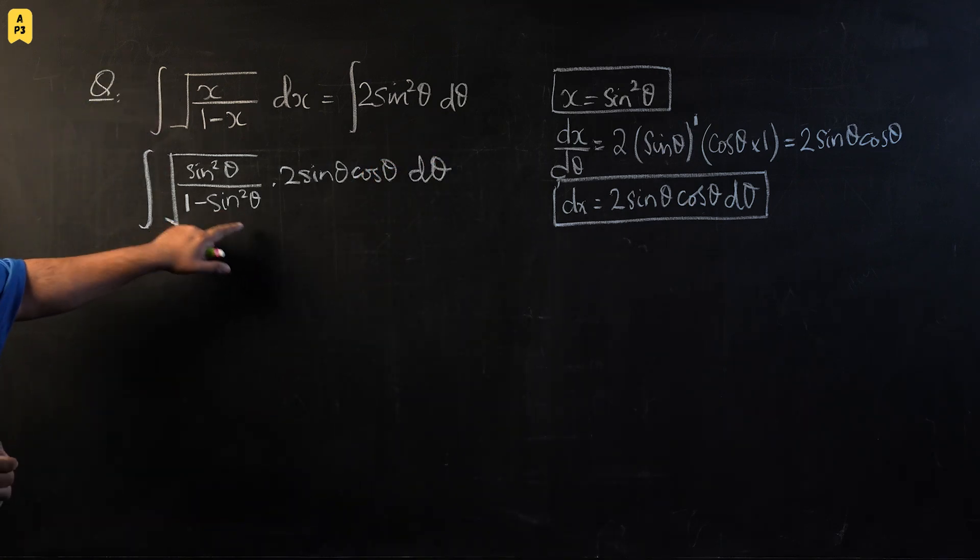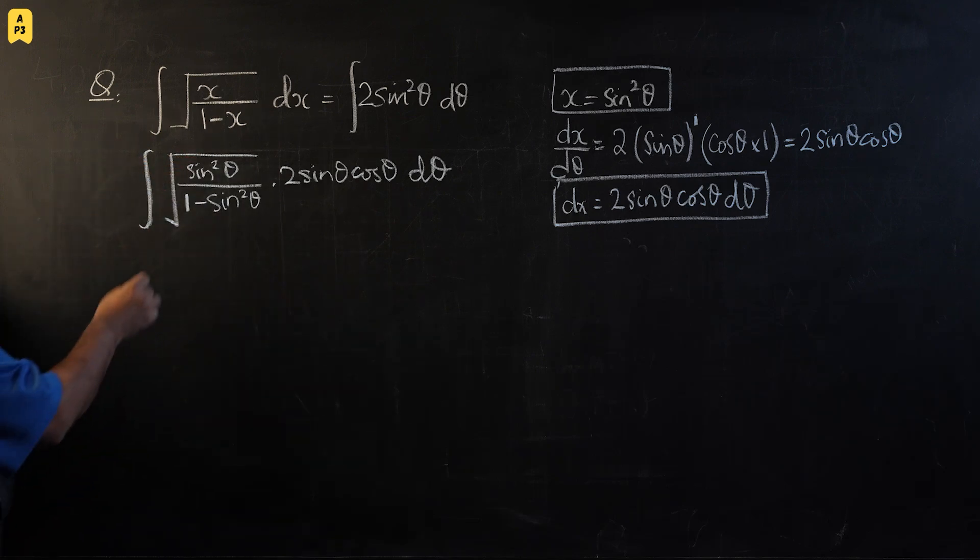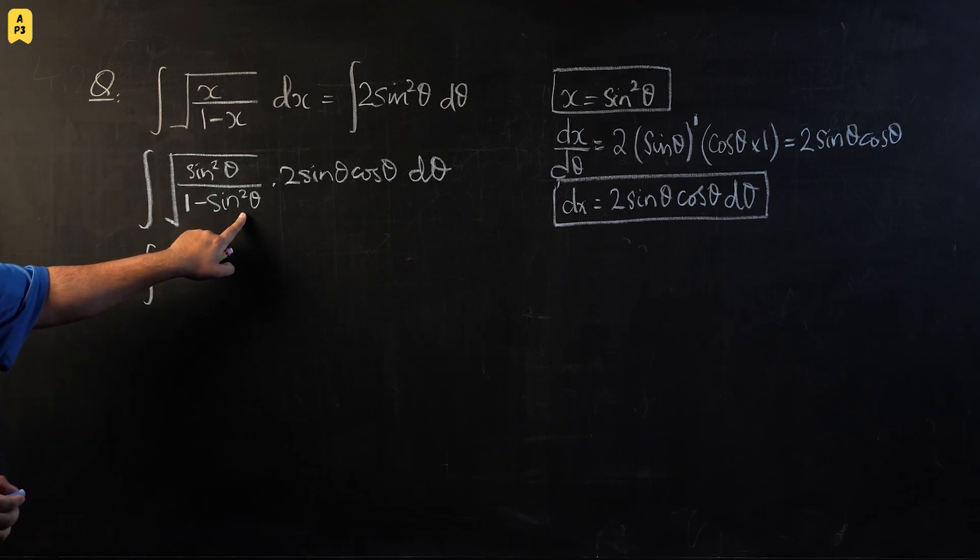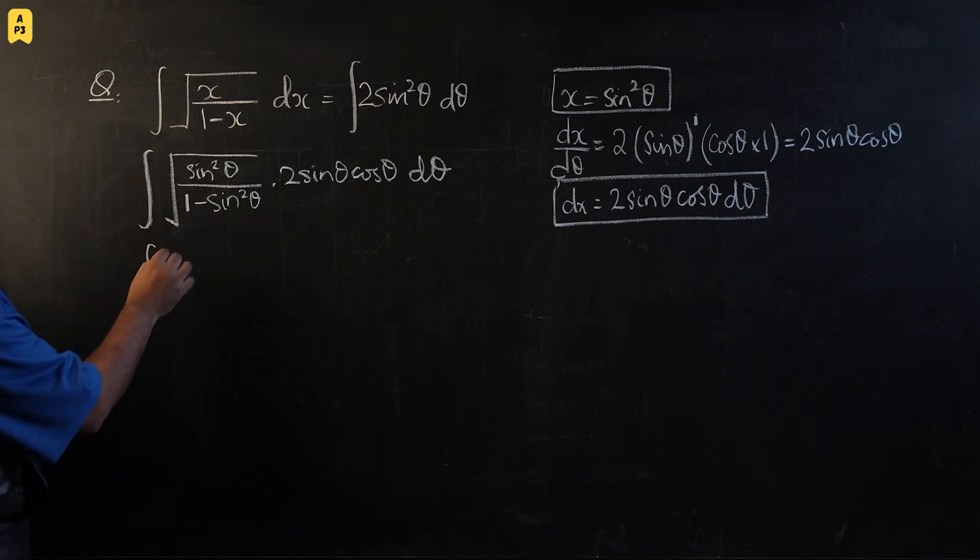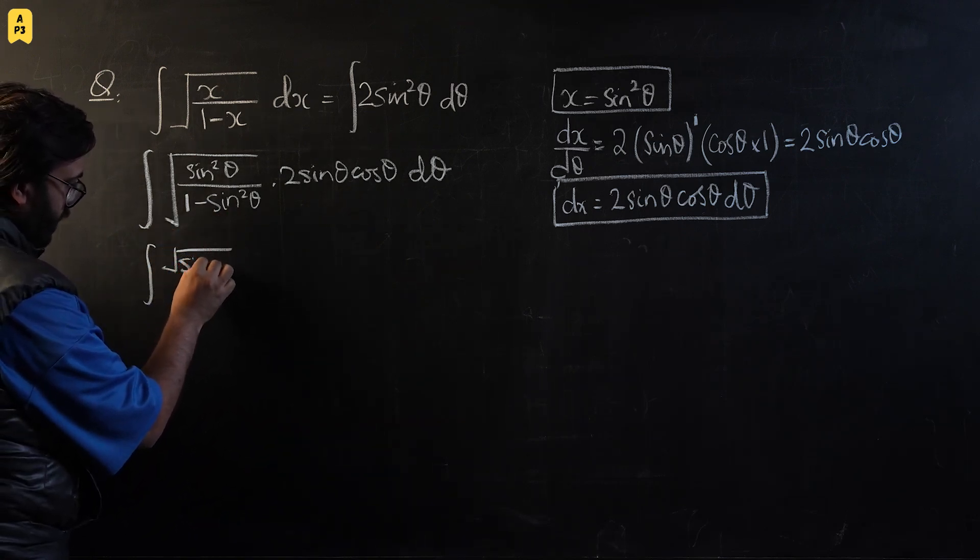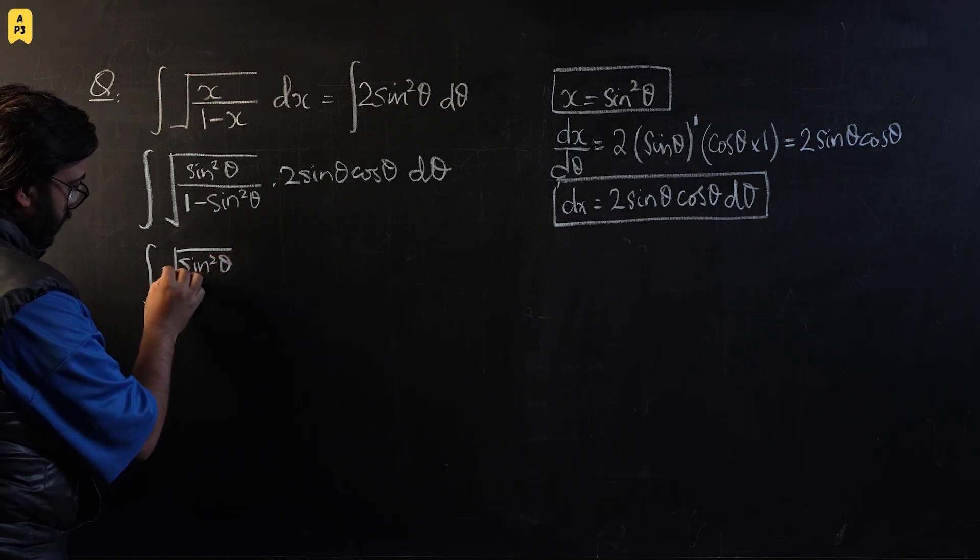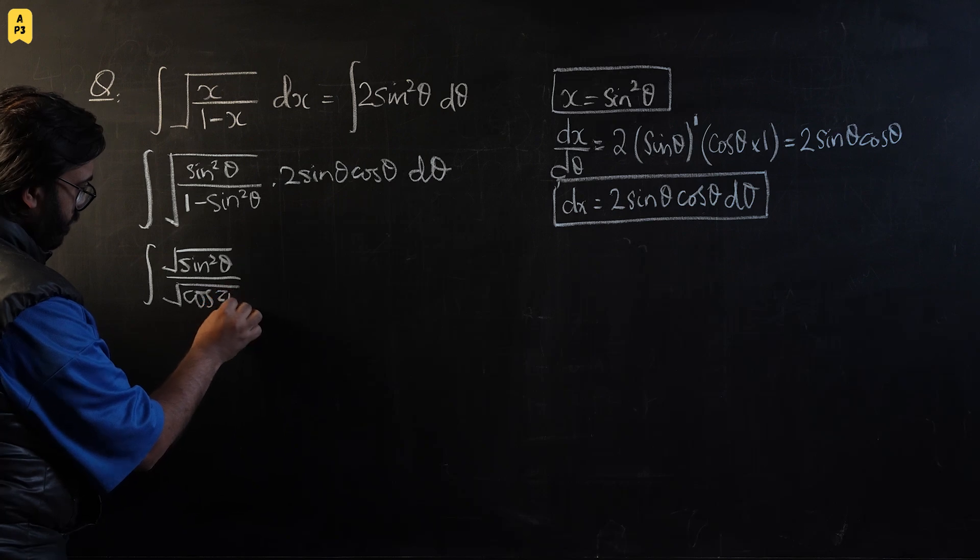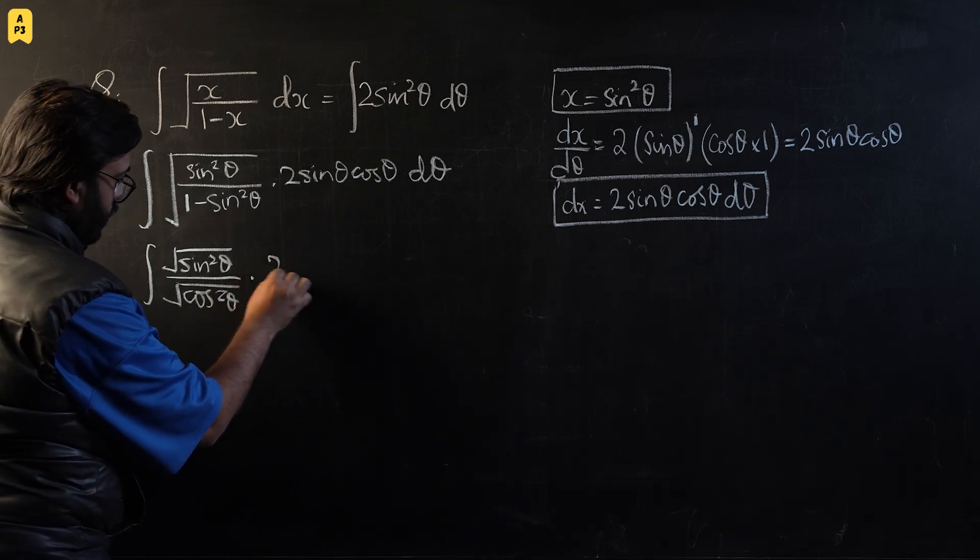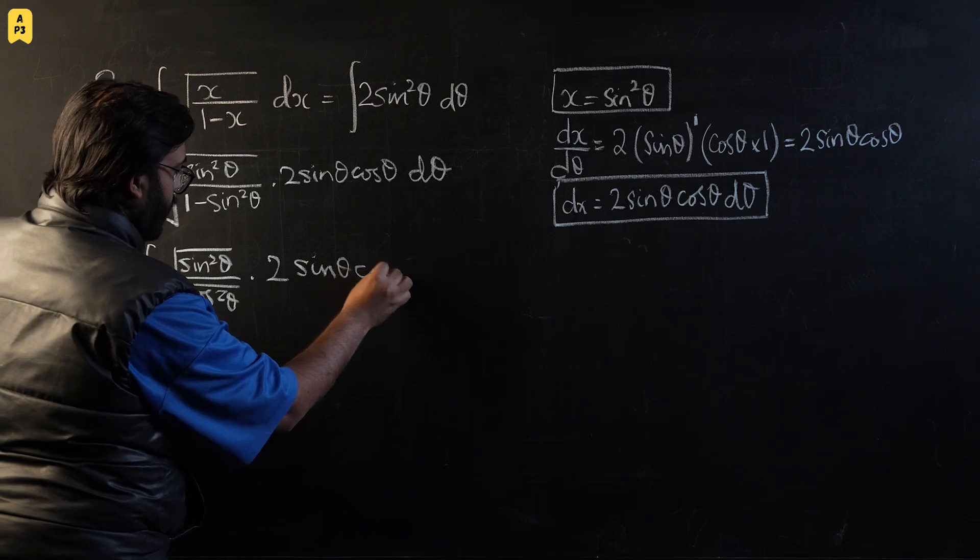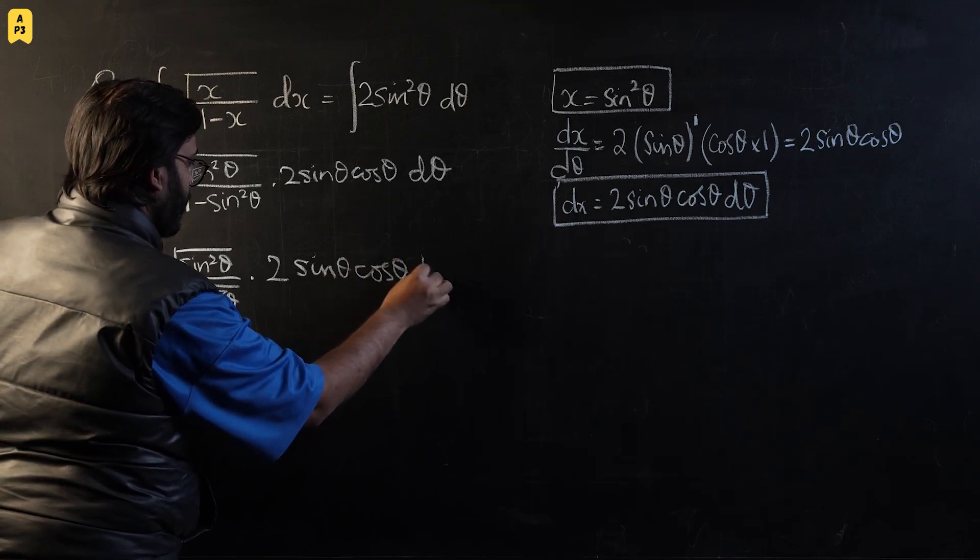All right, so now we split these square roots. This 1 - sin² is going to become cos². So this will become √(sin²θ)/√(cos²θ) times 2sinθcosθ dθ.